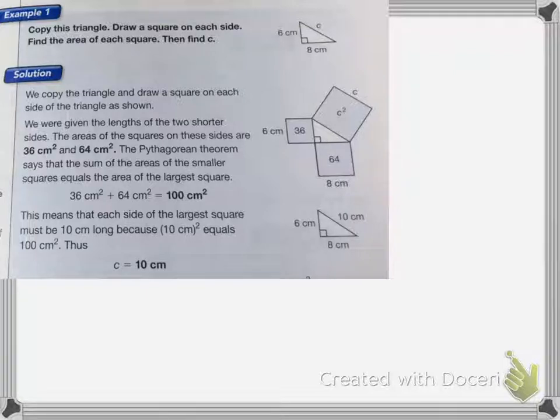So 36 centimeters squared plus 64 centimeters squared would equal 100 centimeters squared. So C squared would equal 100 centimeters squared.